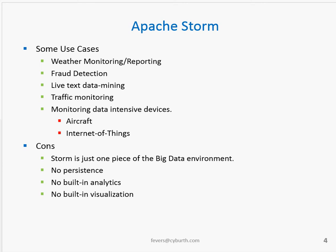Some use cases for STORM are that you could use it for a weather monitoring application where you collect data in real time, fraud detection with credit card charges flowing through computers in real time, data mining on live text, traffic monitoring, and other data-intensive devices which will be arising with Internet of Things and are already present with aircraft and so on. Among the cons, STORM is just one piece of the big data environment — it is exclusively used for in-memory processing of streaming data.